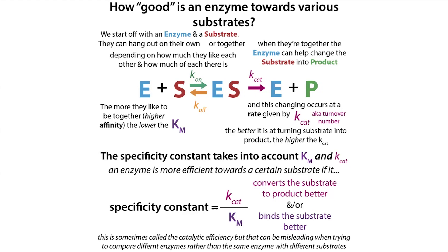We can use this term Kcat over Km, and it's really good if you're trying to analyze the same enzyme with different substrates, but it's not so good for comparing different enzymes — so it can be a bit misleading in that regard. Just know that the specificity constant can be used to compare how good an enzyme is for one substrate versus how good it is for another substrate.